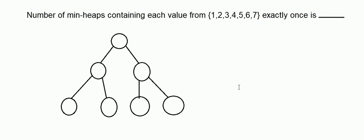In this video we are going to talk about a question which says we have to find out the number of min-heaps containing each value from 1 to 7 exactly once. Before we solve this problem, I hope you know what a min-heap is. In a min-heap, the root value is always less than or equal to its children values.